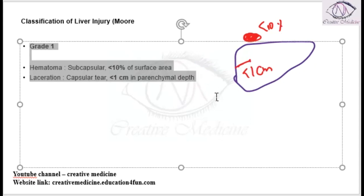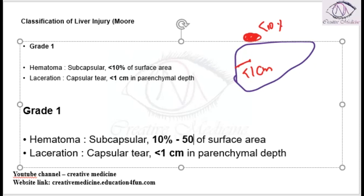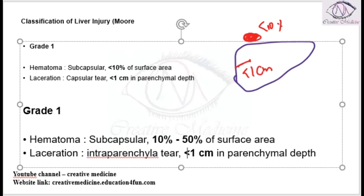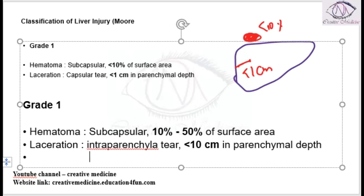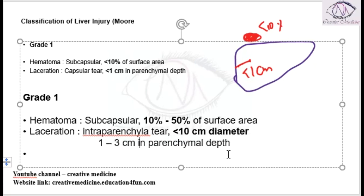Then we have Grade 2. In Grade 2, there is a subcapsular hematoma present involving 10 to 50% of surface area. The laceration is now intraparenchymal — an intraparenchymal tear of 1 to 3 cm parenchymal depth and involving less than 10 cm in length. So this is Grade 2.